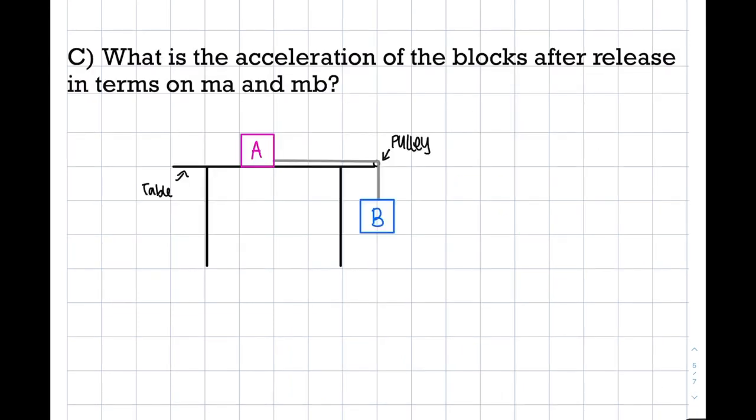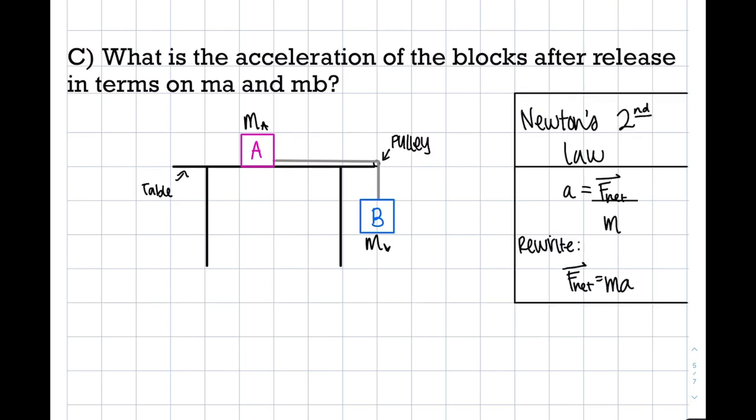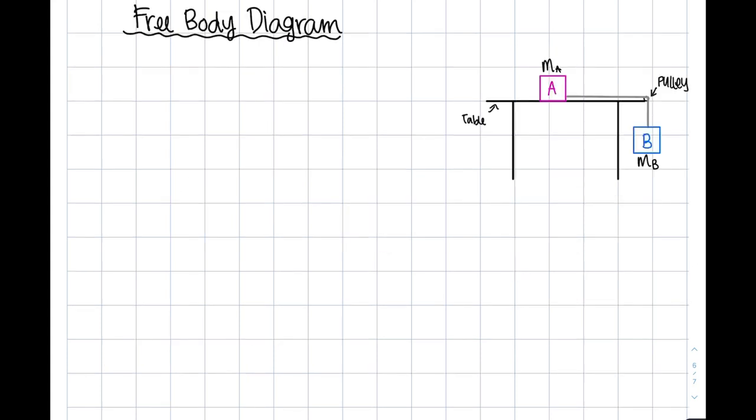Question C states, what is the acceleration of the blocks after release in terms of MA and MB? To help us find acceleration, we will need to use a handy dandy Newton's second law. We'll also have to try drawing a free body diagram to better understand the situation. So blocks A and B both have gravitational force. On block A, the table or surface against block A exerts a normal force, which is the force of gravity's reaction pair. Gravity wants to pull down, but normal force is like, not today. There is also tension from the string on both block A and B.